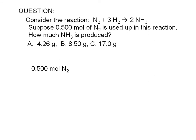We are given that the amount of nitrogen consumed in the reaction is 0.500 moles. To calculate the amount of ammonia produced, all we have to do is multiply the moles of nitrogen consumed by a conversion factor.